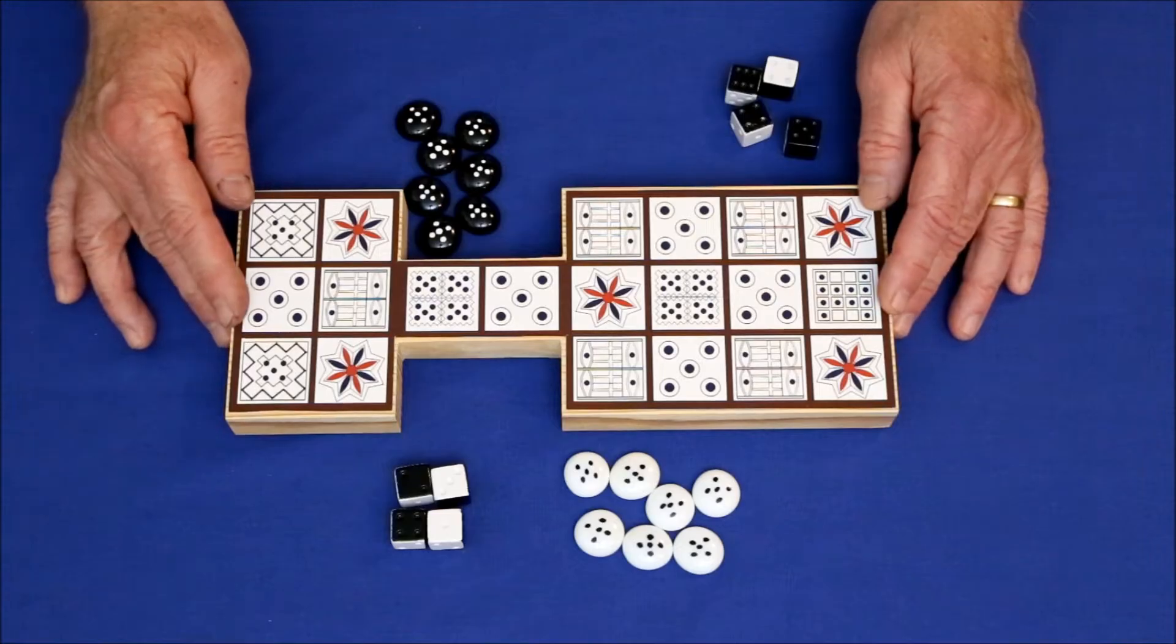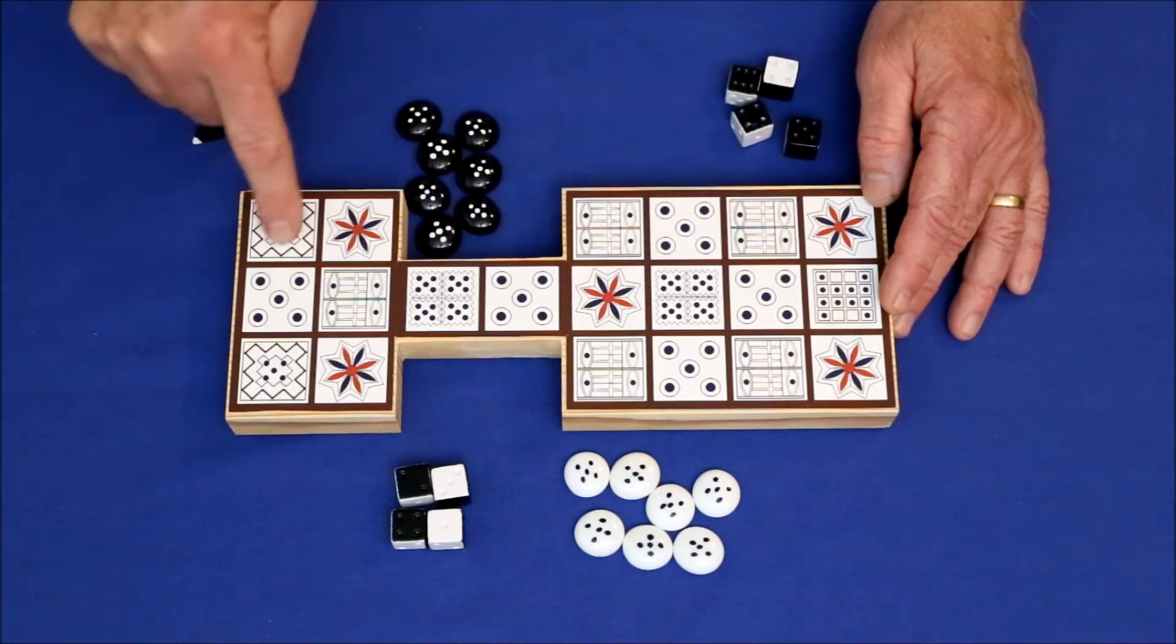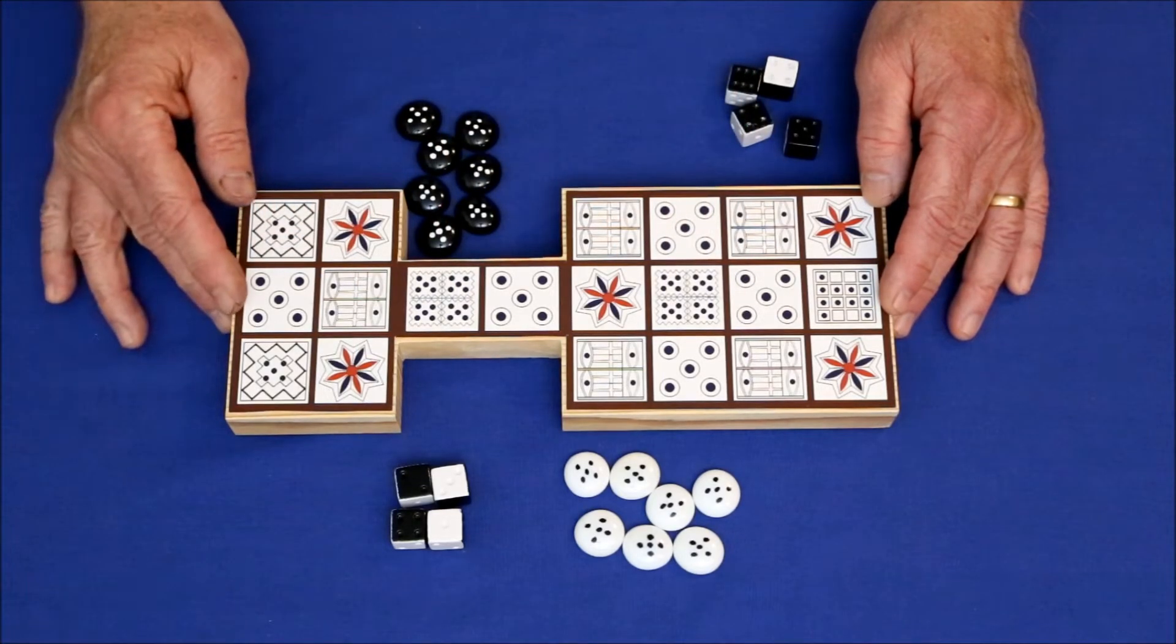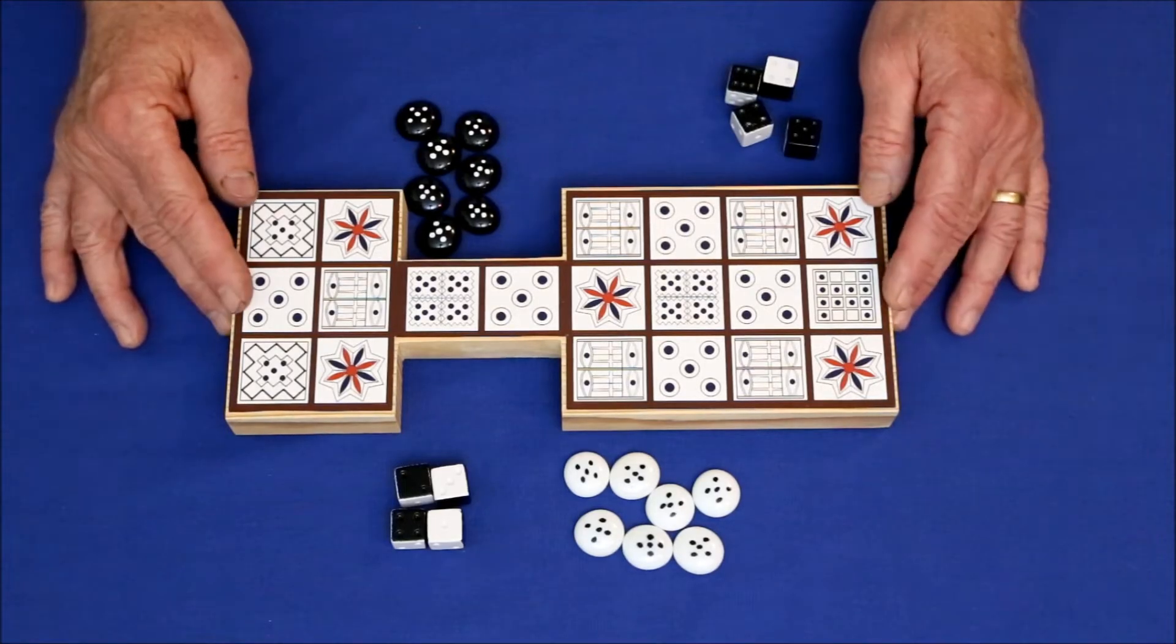Its common name is the Game of 20 Squares. Experts agree that it's at least 5,000 years old, making it one of the oldest board games in the world.